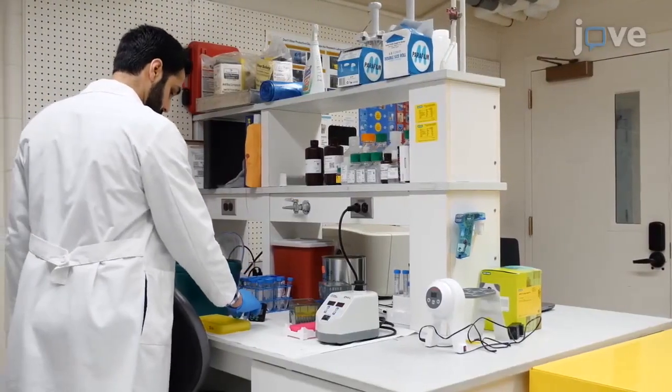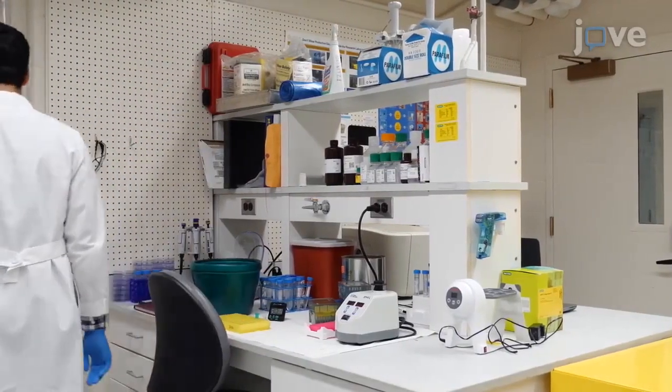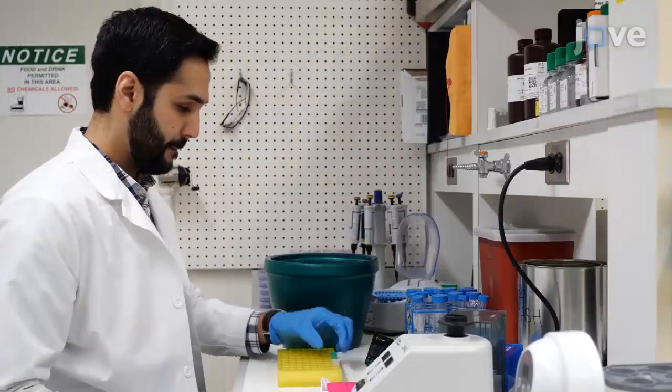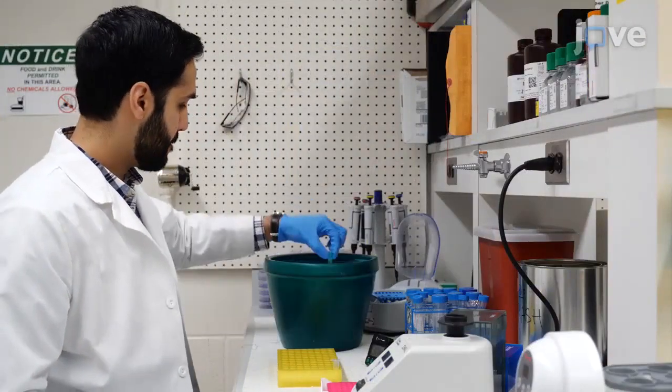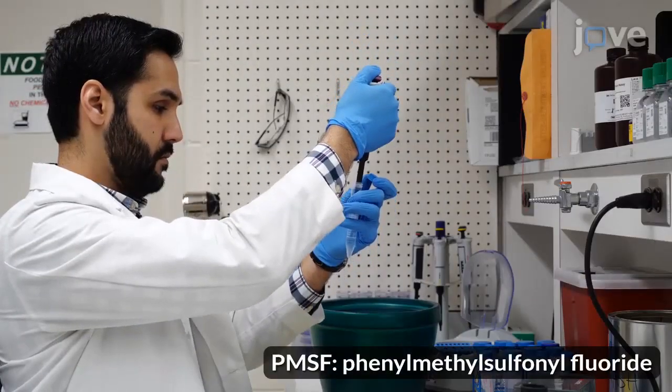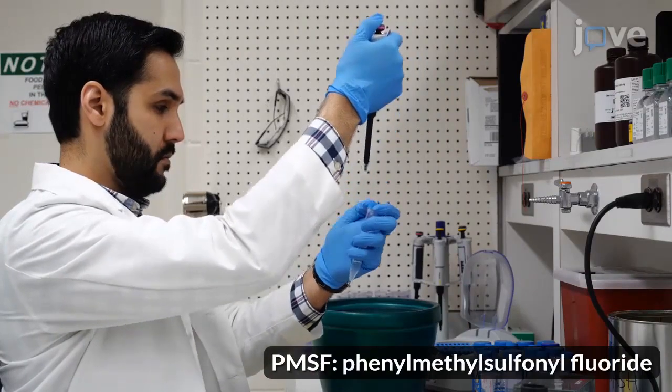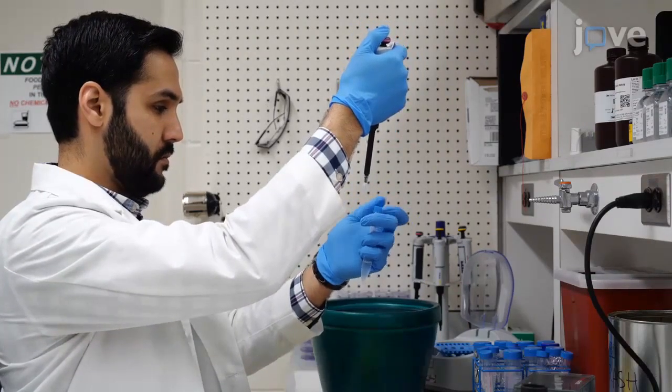Immediately prior to cell lysing, thaw a frozen aliquot of NP40 lysis buffer. Once thawed, place the lysis buffer on ice. Add PMSF protease inhibitor to the NP40 lysis buffer to reach a final concentration of 0.2 millimolar.